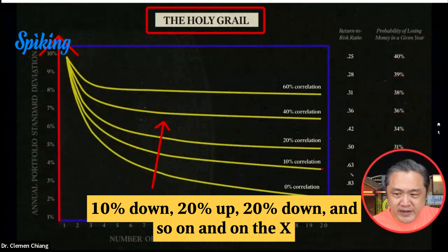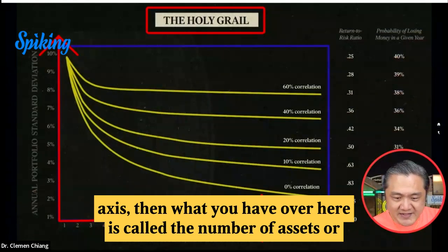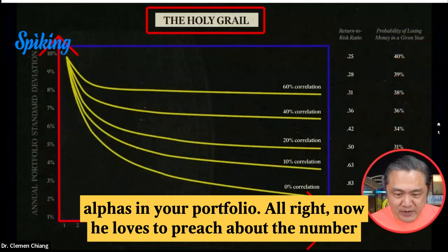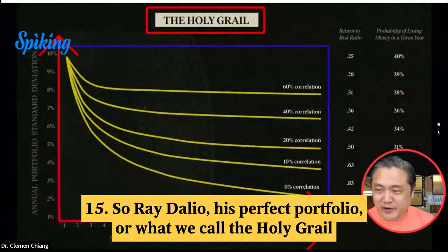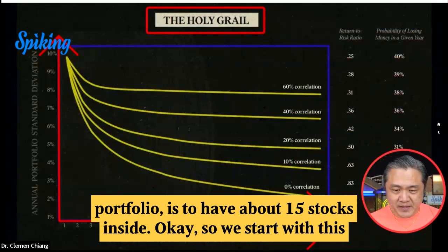On the x-axis, what you have over here is called the number of assets or alphas in your portfolio. Now Ray Dalio loves to preach about the number 15. His perfect portfolio, or what we call the holy grail portfolio, is to have about 15 stocks inside. So we start with this concept.